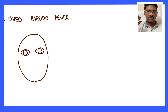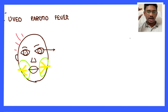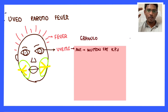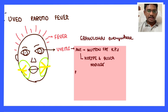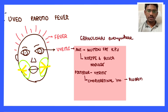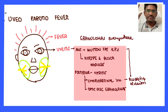Uveoparotid fever is seen in sarcoidosis, characterized by fever with uveal involvement. Sarcoidosis causes granulomas everywhere — granulomas in the iris can form anterior uveitis, forming nodules like Koeppe nodules and Busacca nodules at the base of the iris, and mutton-fat keratic precipitates. If intermediate and posterior uvea are involved, chorioretinal granulomatous lesions occur, causing blurring of vision. Optic disc granulomas may also form.